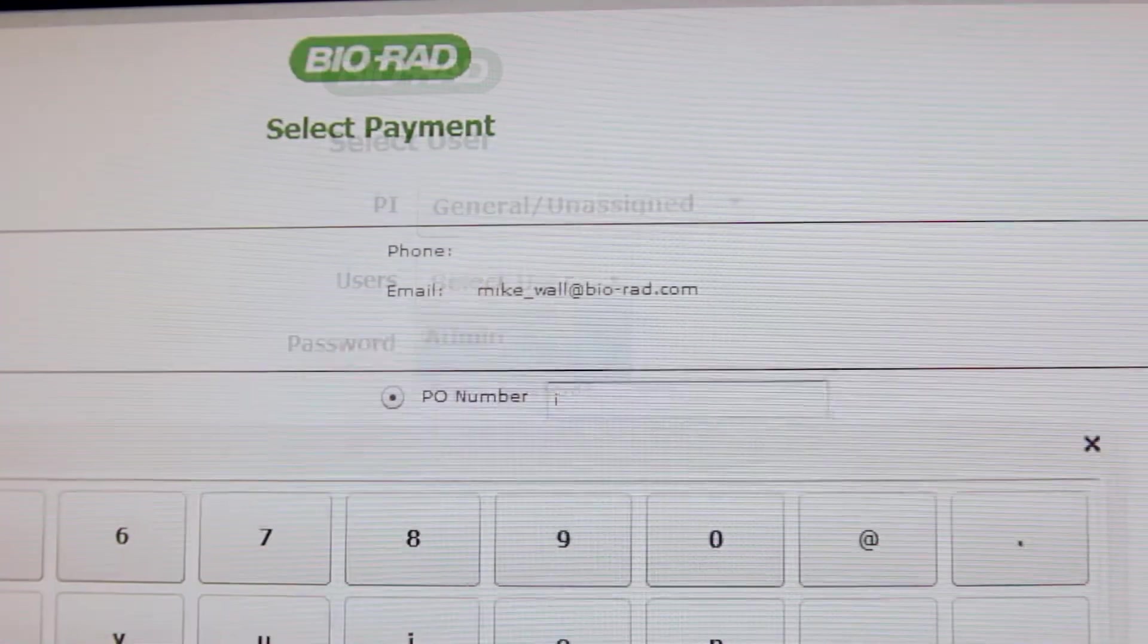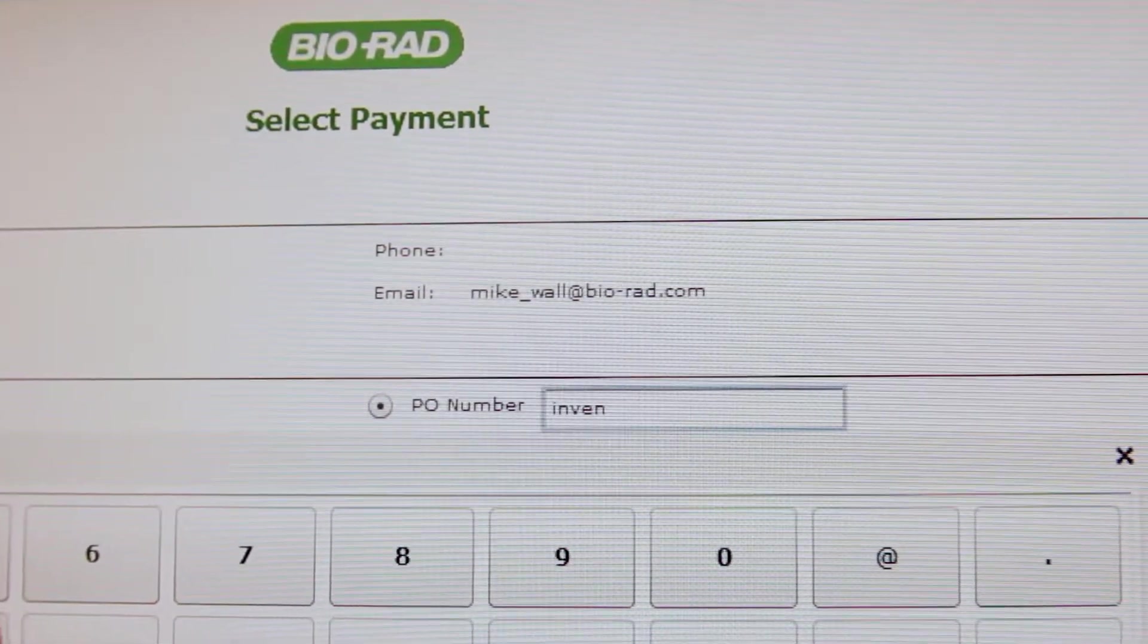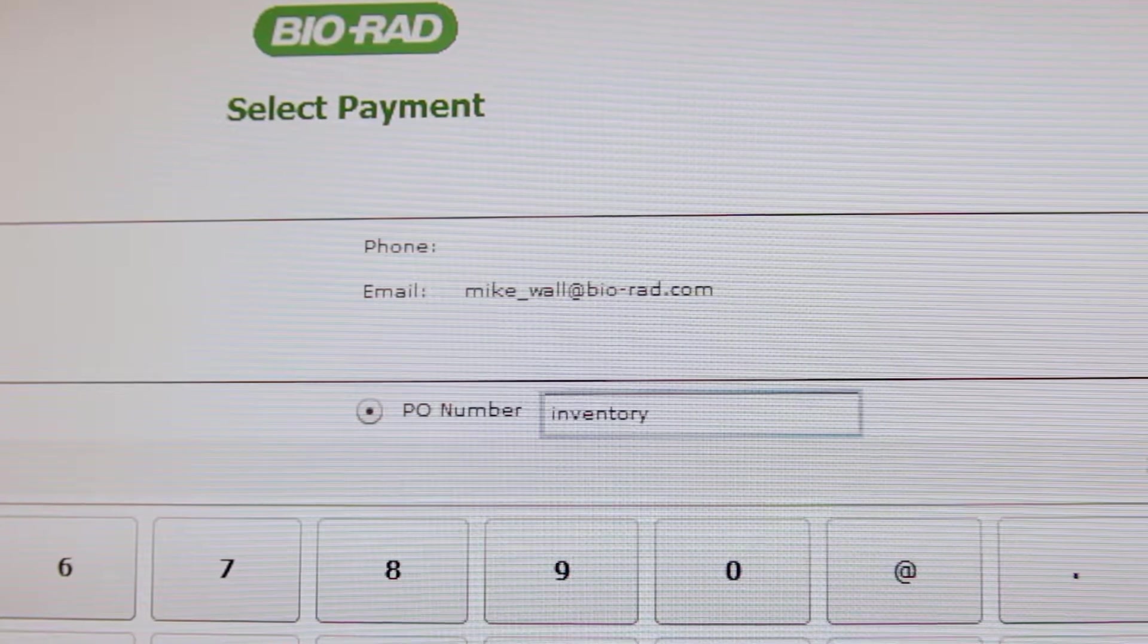Select Inventory as the payment option in the PO field. If it does not appear, type the word Inventory.